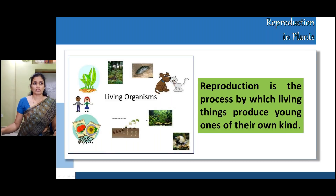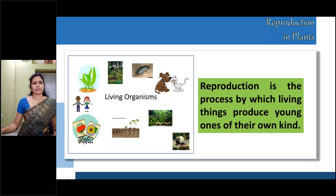What are you seeing here? All these are living organisms — a plant, a snake, a cockroach and its young one, a dog and its baby, fishes, a snail, a seed growing into a plant, tomato seeds, sunflower seeds, and a baby and a boy. All these are living organisms. Reproduction is the process by which living things produce young ones of their own kind.